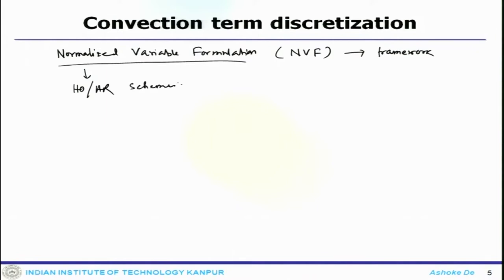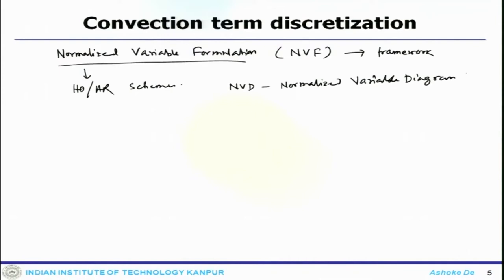It was introduced long time back. The Normalized Variable Diagram, or NVD, is a useful tool for the development and analysis of higher order high resolution schemes. NVF is a face formulation based on locally normalizing the dependent variable, for which the value φ_f at the face is to be calculated or constructed.